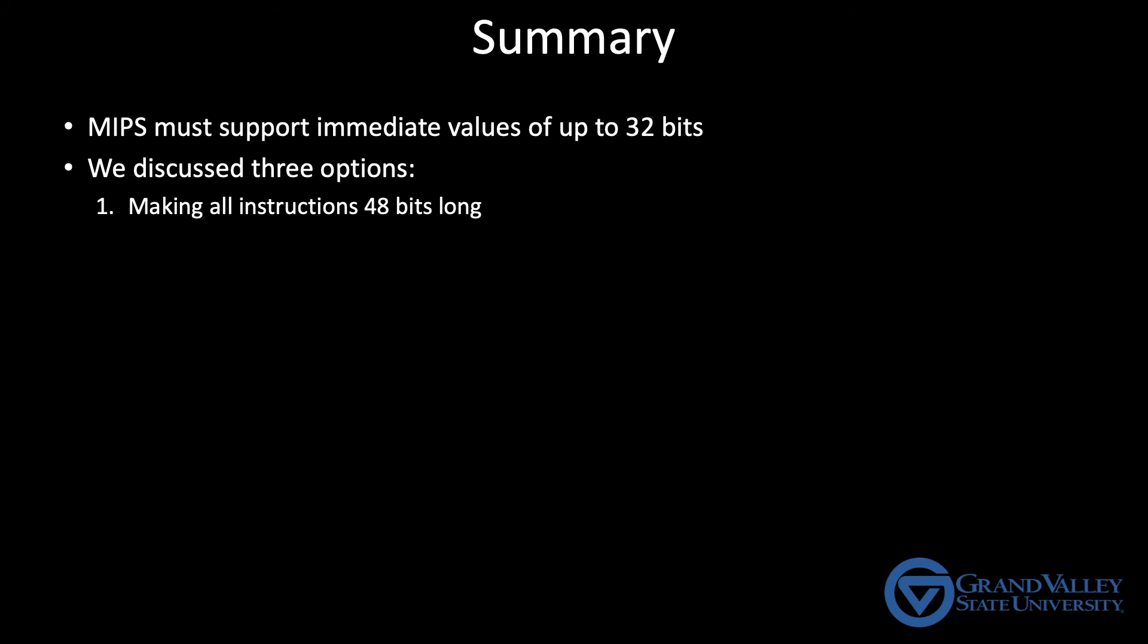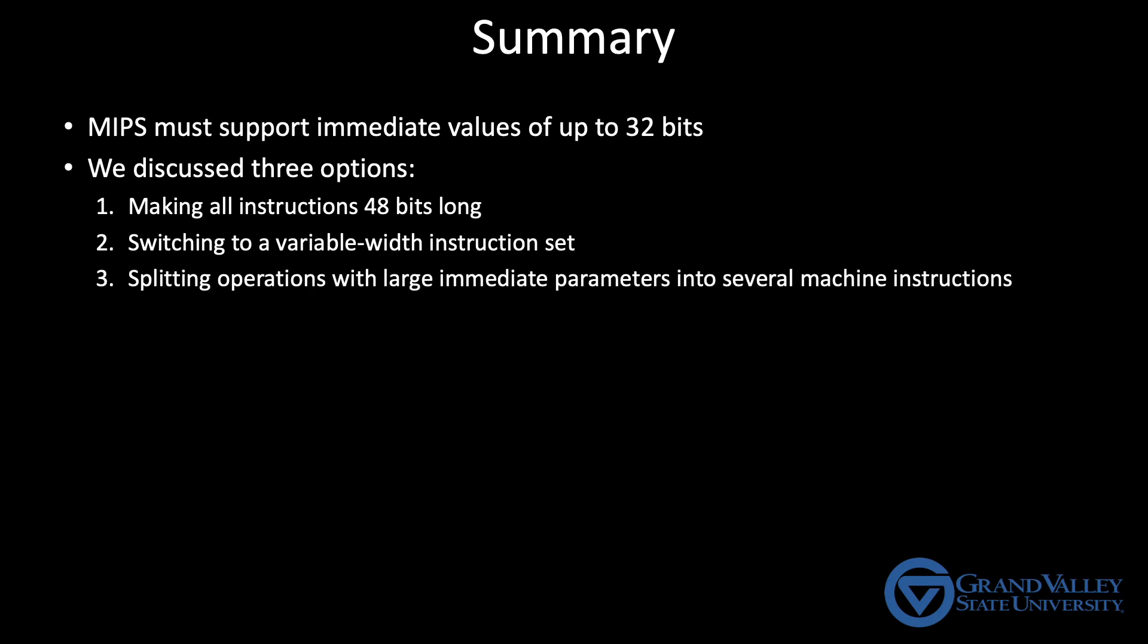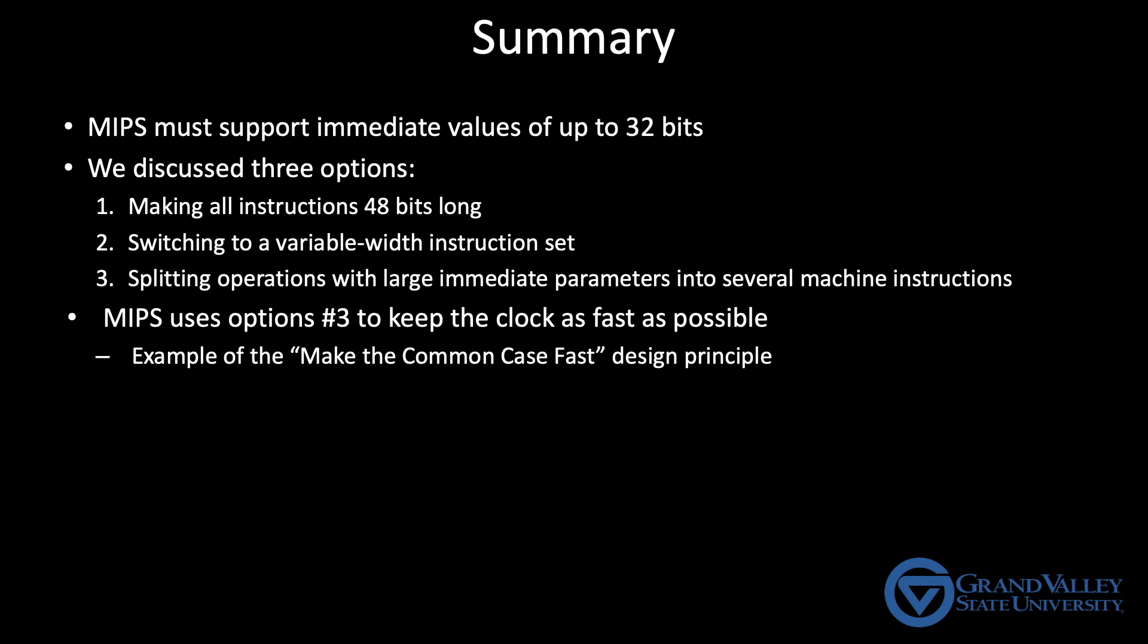Okay, let's summarize. Our CPU needs a way to support those immediate values with lengths between 16 and 32 bits. Remember, this isn't trivial because the I-type instruction format only has room for a 16-bit immediate. In this video, we discussed three options. One, making all instructions 48 bits long. Two, switching to a variable width instruction set and allowing the I-type and R-type instruction formats to have a different number of bits. Or three, splitting instructions with large immediate values into several instructions. MIPS chose the third option because the first two would necessitate a longer clock, thereby slowing every instruction down. Option three only slows down those few instructions with large immediate values. This is an example of the make-the-common-case-fast design principle.